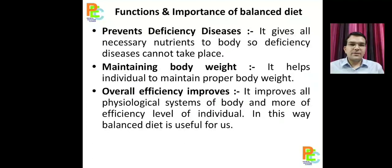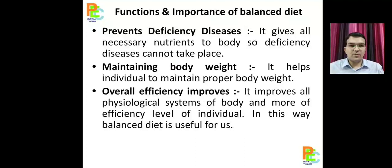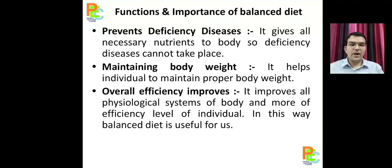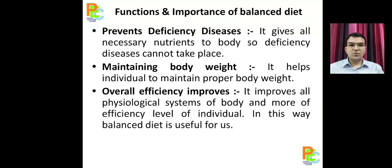Next is prevent deficiency and diseases. Deficiency means lack of some nutrient, and a balanced diet improves our immunity and prevents us from diseases. A proper diet keeps us away from any kind of deficiency and disease. Next is maintain body weight. If we are eating as much as required and taking the components of diet in the required ratio and quantity, we can maintain our weight. But if we eat more and do less workout, we will gain weight.